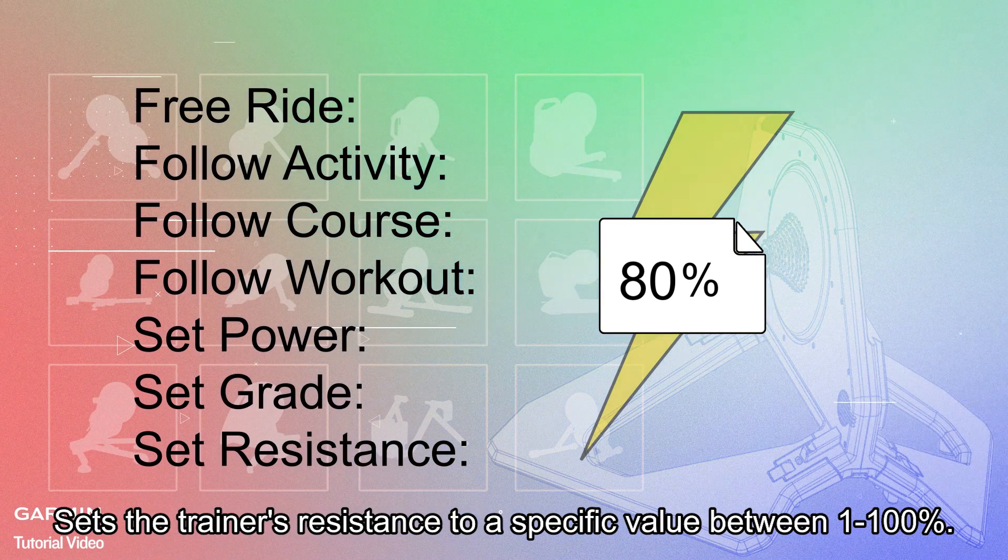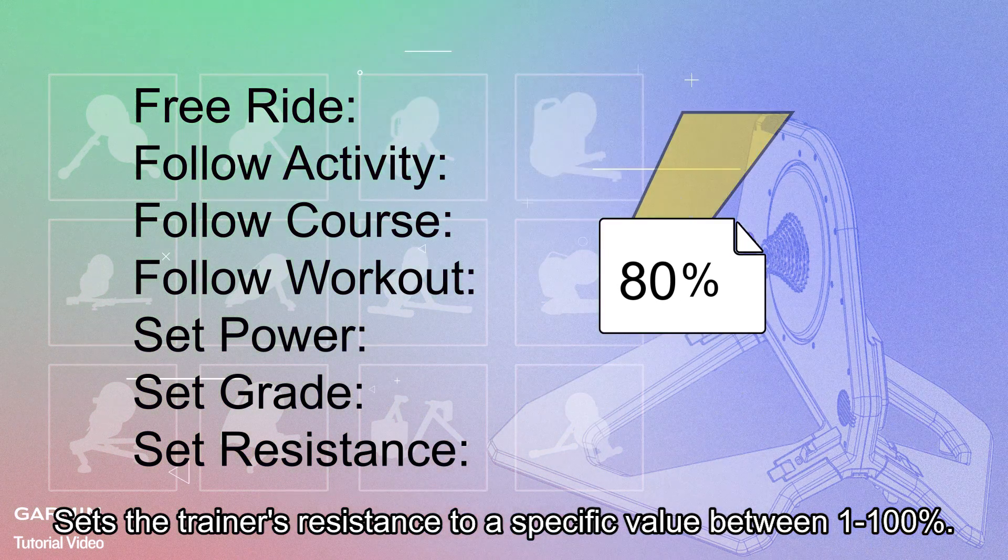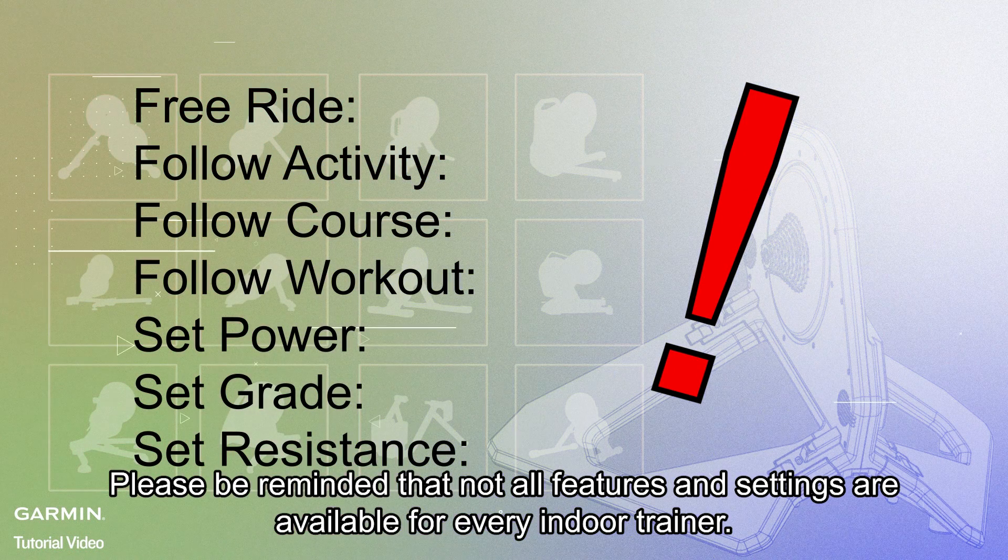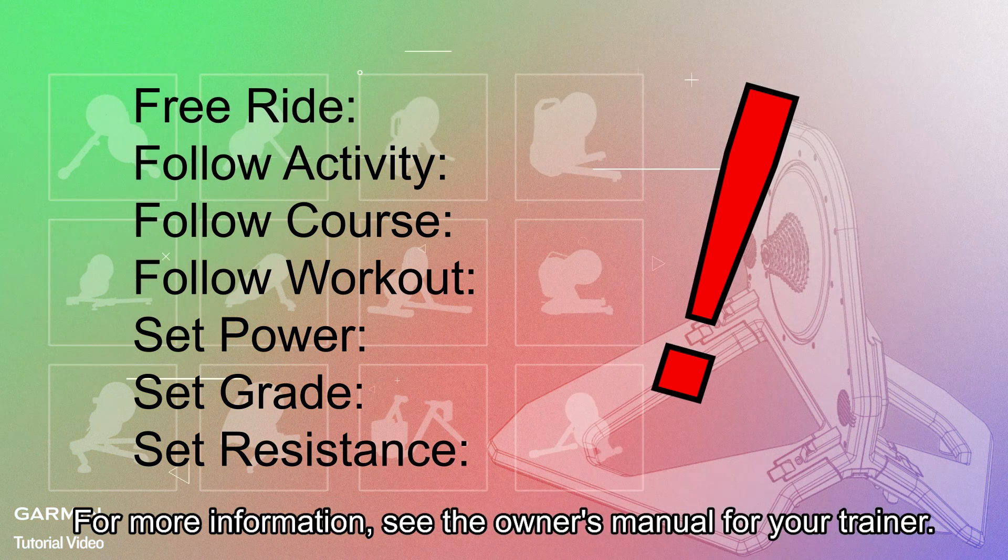Set Resistance: Sets the trainer's resistance to a specific value between 1 to 100%. Please be reminded that not all features and settings are available for every indoor trainer. For more information, see the owner's manual for your trainer.